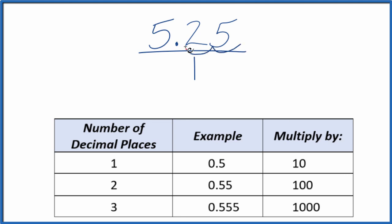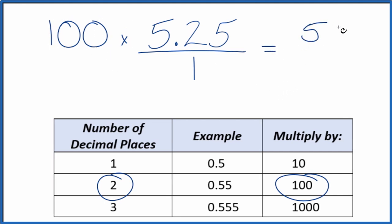Whenever I have two decimal places after the decimal point, I'm going to multiply this by 100, and that'll give me a whole number. So I can take 100 times 5.25, that ends up giving me 525.